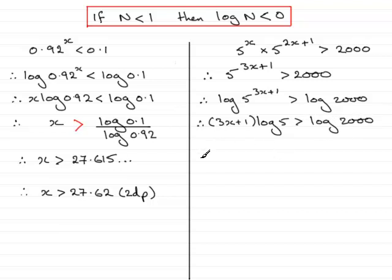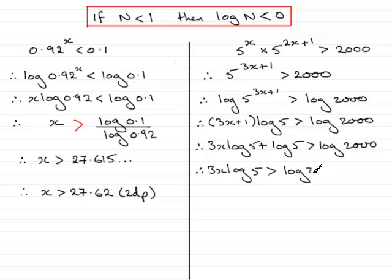All I need to do now is expand the brackets and we have 3x times log 5 gives 3x log 5, and then 1 times log 5 is just simply log 5, and that's greater than the log of 2,000. Now I'm going to subtract log 5 from both sides and that would leave me with 3x log 5 is greater than the log of 2,000 minus log 5.